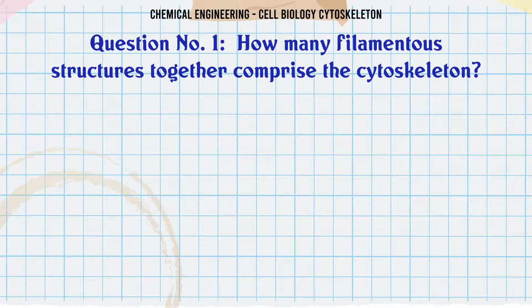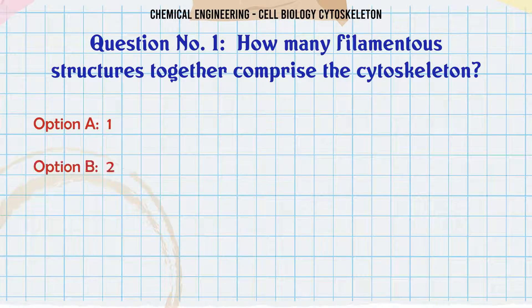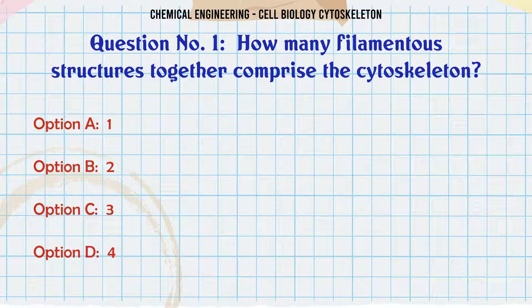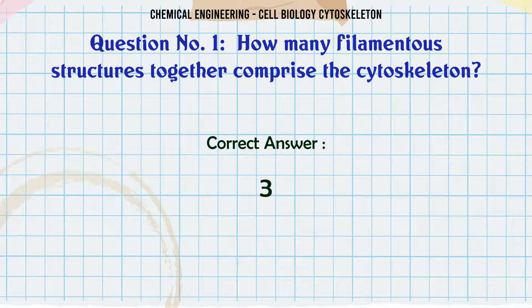How many filamentous structures together comprise the cytoskeleton? A: 1, B: 2, C: 3, D: 4. The correct answer is 3.